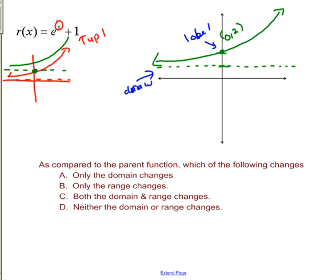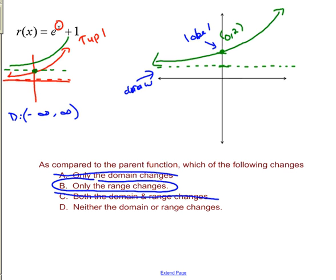What changed for e to the x plus one? The original domain was negative infinity to infinity — shifting, stretching, or flipping will never change that. So the domain has not changed. The original range was zero to infinity (not including zero), and now the range is one to infinity (not including one). So the range did change.